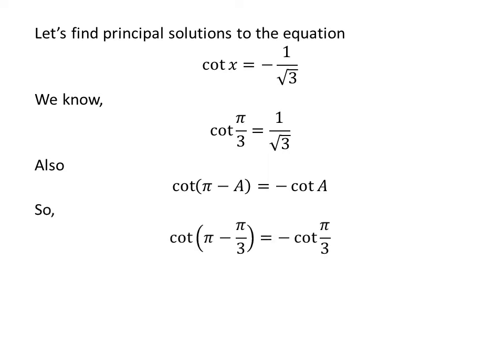Applying this identity, cotangent of pi minus pi upon 3 is equal to minus cotangent of pi upon 3, which gives cotangent of 2 times pi upon 3 is equal to minus 1 upon square root of 3.